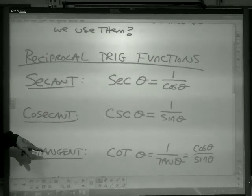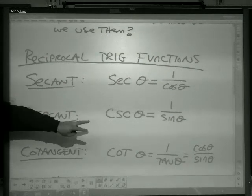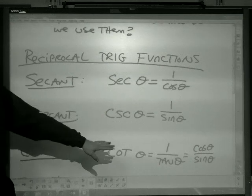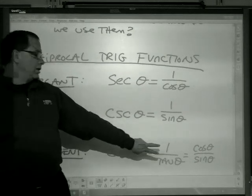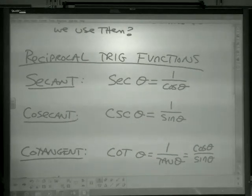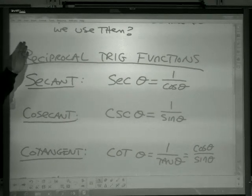Cotangent, that's kind of the easier one to remember, is the reciprocal of tangent, so 1 over tangent. But since tangent is sine over cos, it could also be written as cos over sine, the reciprocal of tangent. Those are your three reciprocal trig functions.